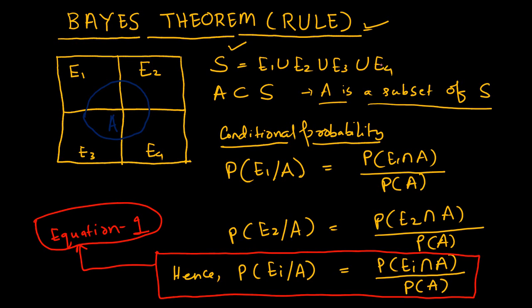In this video, I am going to talk about the Bayes' theorem and I will also talk about the Bayes' rule used in different situations. So let us take an example. Here is an example. There is a set S which is a combination of four different sets E1, E2, E3 and E4.